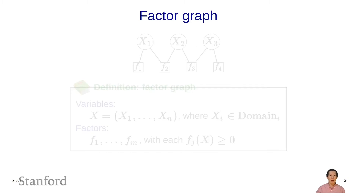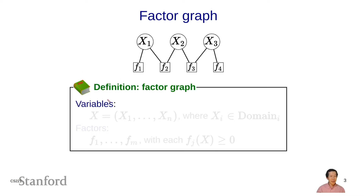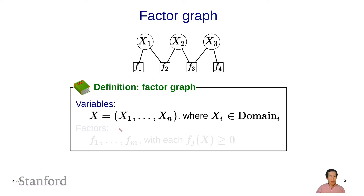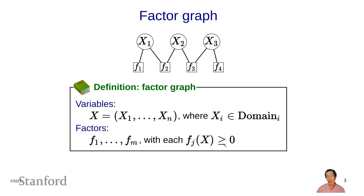So now we're ready to formally define a factor graph. A factor graph consists of a set of variables x1 through xn, where big X denotes the set of all variables, and each variable xi takes on values in some set of possible values known as the domain of variable i. A factor graph also consists of a set of factors f1 through fm. Each fj is a function that takes as input an assignment to the variables and returns a non-negative number. It's important that this function returns a non-negative number because later we'll multiply them together.